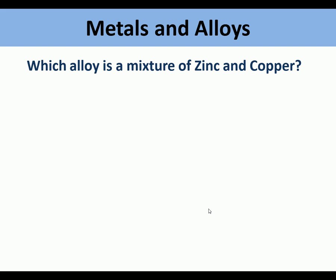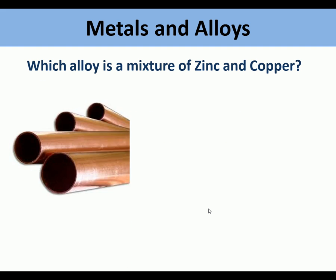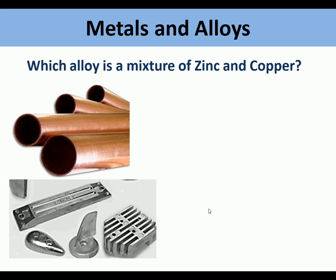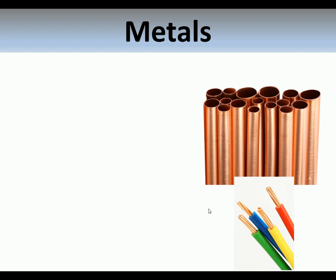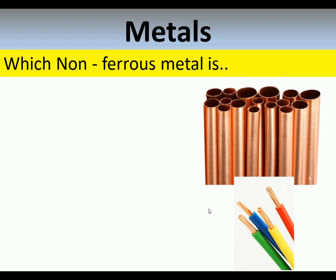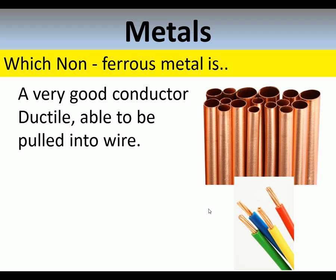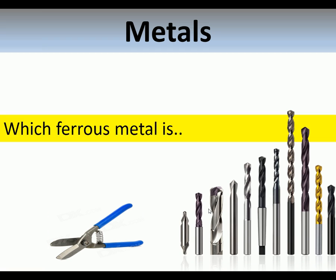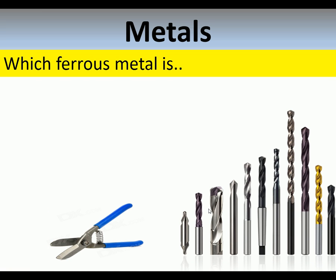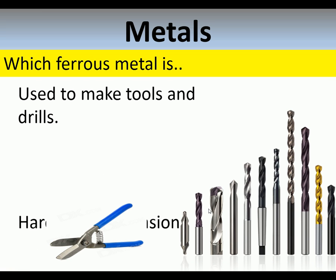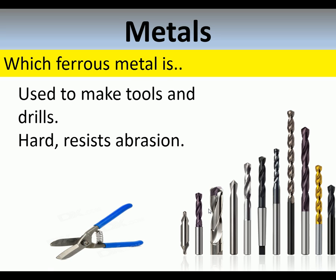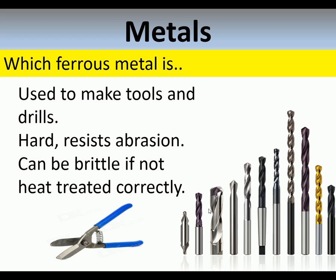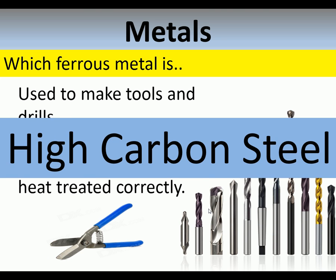Which alloy is a mixture of zinc and copper? It is brass. Which non-ferrous metal is a very good conductor, ductile, able to be pulled into wire, and has good corrosion resistance? It is copper. Which ferrous metal is used to make tools and drills, is hard and resists abrasion, and can be brittle if not heat treated correctly? High carbon steel.